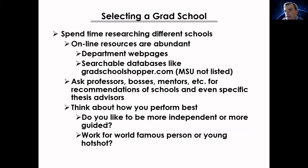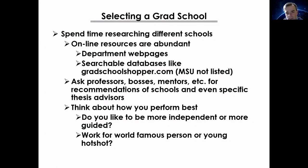Once you decide to apply to graduate school, spend time researching different schools using online resources, departmental web pages, and searchable databases. Ask professors and mentors for recommendations of schools and specific thesis advisors who may know which universities are strong in your area of interest. Also think about how you perform best — do you want to be very independent, or work in a world-famous group? There are many considerations that go into selecting a graduate school.